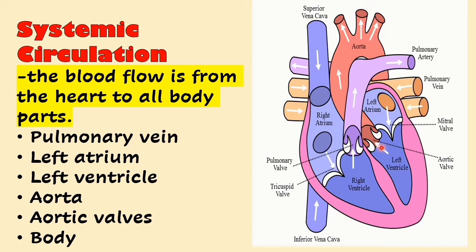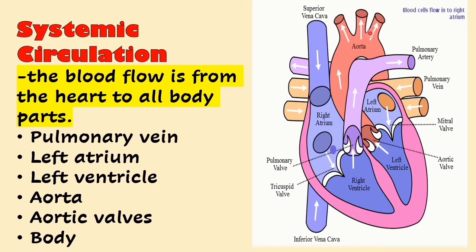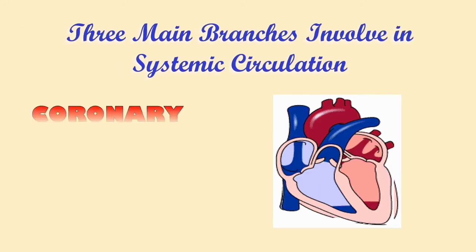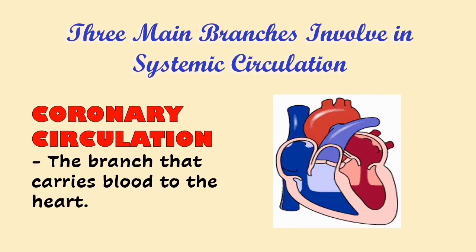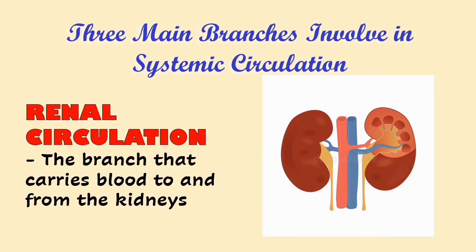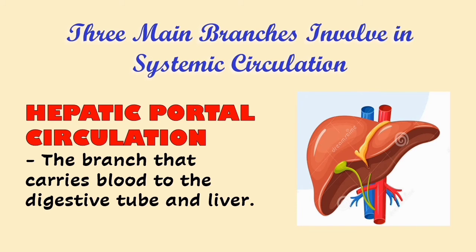Take note: the aorta is the largest artery of the body. The blood passes through the aortic valve before it is sent to all parts of the body through branching smaller arteries to deliver oxygen. In systemic circulation, there are three branches involved. First, the coronary circulation, which carries blood to the heart. Second, the renal circulation, which carries blood to and from the kidneys. And lastly, the hepatic portal circulation, which carries blood to the digestive tube and liver.